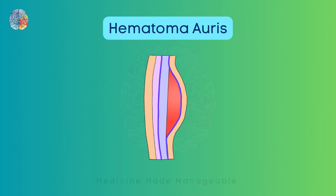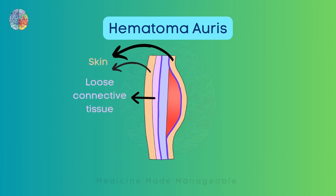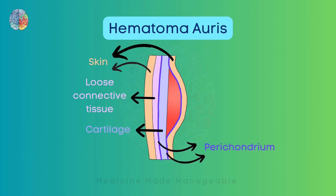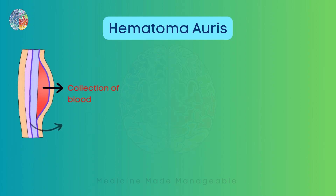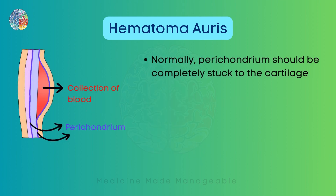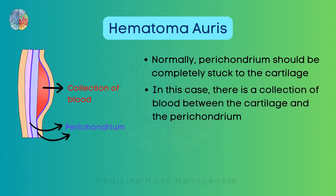Looking at the cross-section of the pinna: on both sides we have the skin, then loose connective tissue, and then the cartilage. Surrounding this cartilage is the perichondrium. Normally, the perichondrium should be completely stuck to the cartilage, but in hematoma auris there is a collection of blood between the cartilage and the perichondrium.